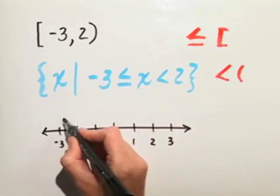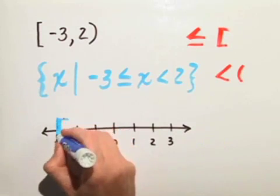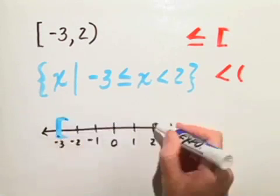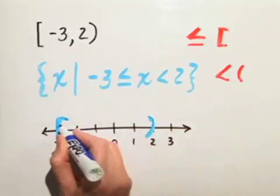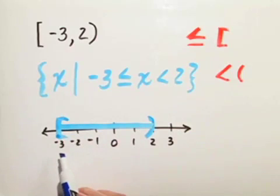So, at the negative 3, we will put a bracket. And at positive 2, we will put a parentheses, and we will include the numbers. So, there is our graph including negative 3, but not including 2. Thank you.